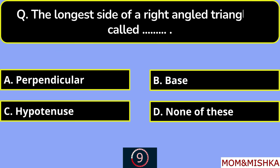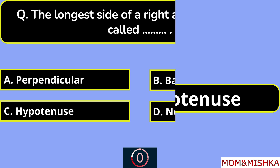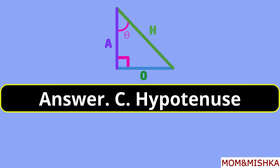The longest side of a right-angled triangle is called what? It is called the hypotenuse. Option C.